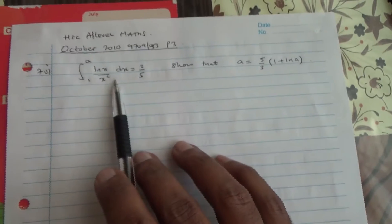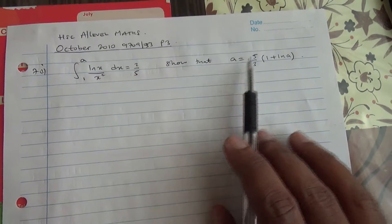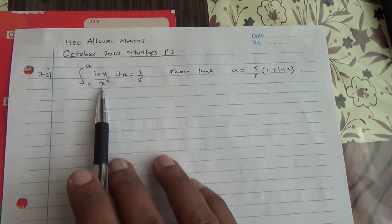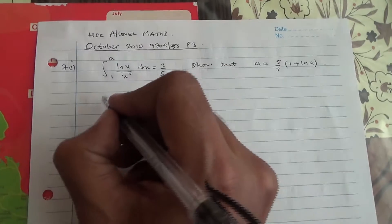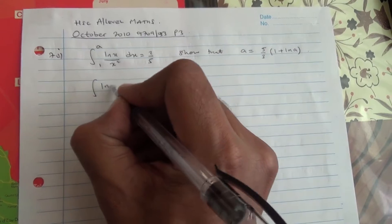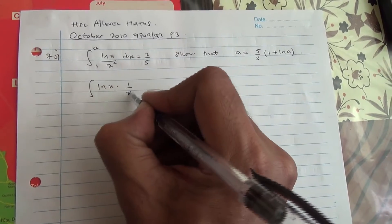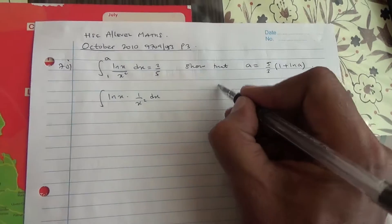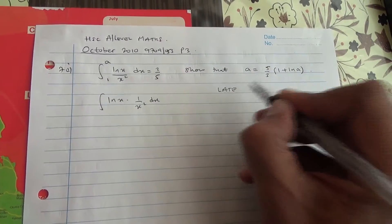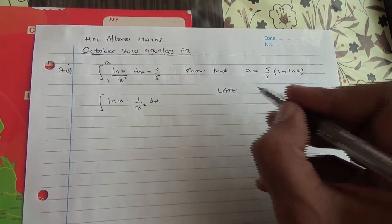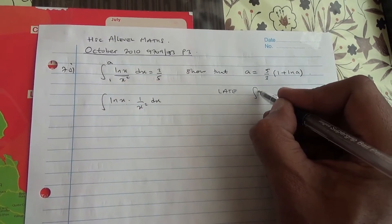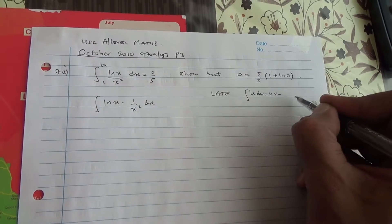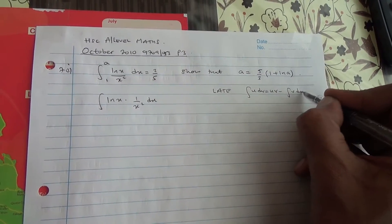So for the first part, we need to prove that a can be written as 5 over 3 into 1 plus ln a. We're going to be integrating the integral of ln(x) times 1 over x squared dx. We can see that this is integration by parts, using the formula: the integral of u dv equals uv minus the integral of v du.